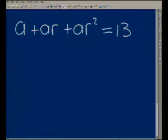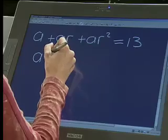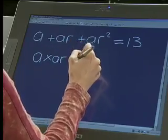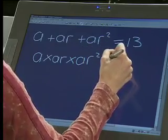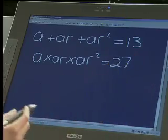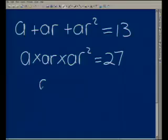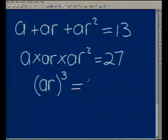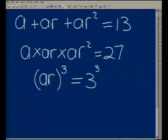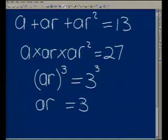They said the sum of the numbers is 13. They also said the product is 27, so A times AR times AR squared equals 27. Now, there are three A's here so this is A cubed times R cubed equals 27. That means AR cubed equals 27, and 27 is 3 to the power 3. So we can take the cube root on either side and say AR equals 3. Therefore R is 3 over A.